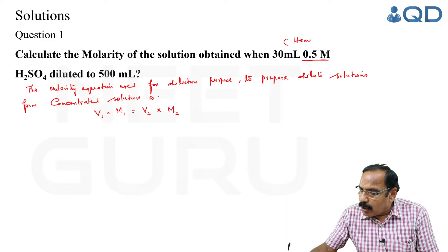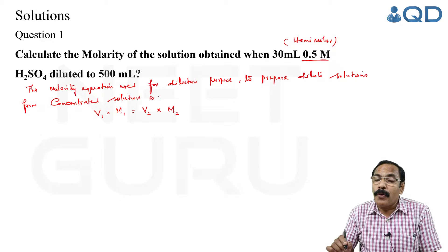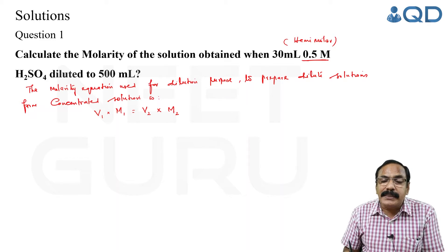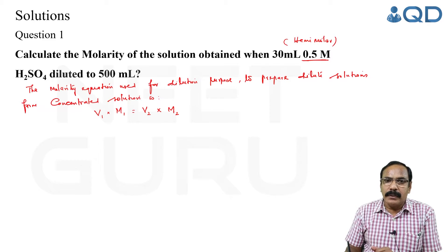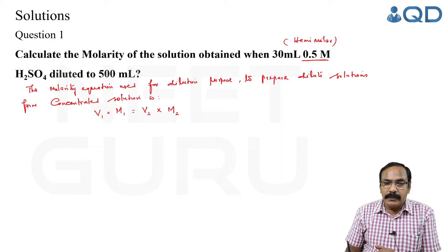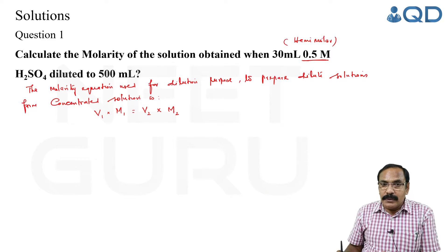Sometimes in the question paper they may use such words - hemi or semi. 0.1 molar is called decimolar (10⁻¹), 10⁻² is centimolar.